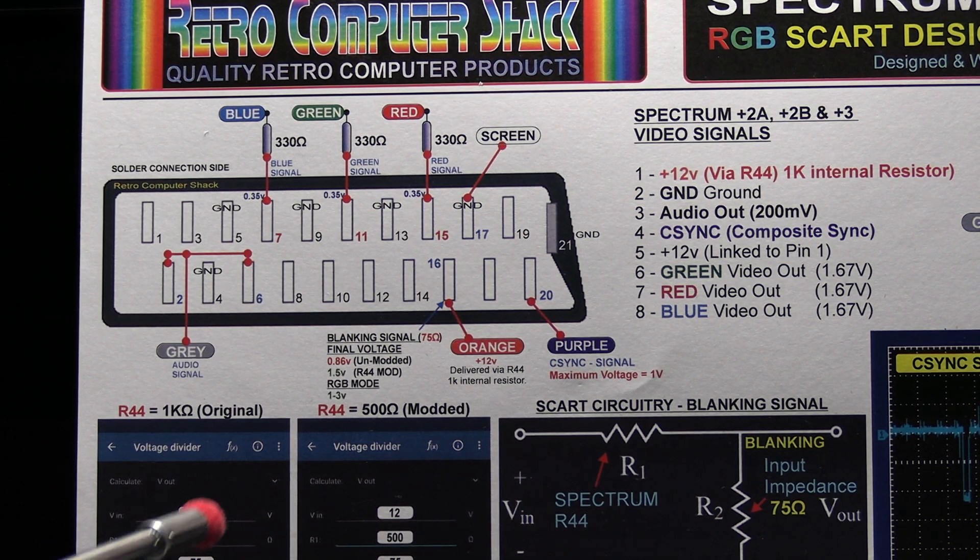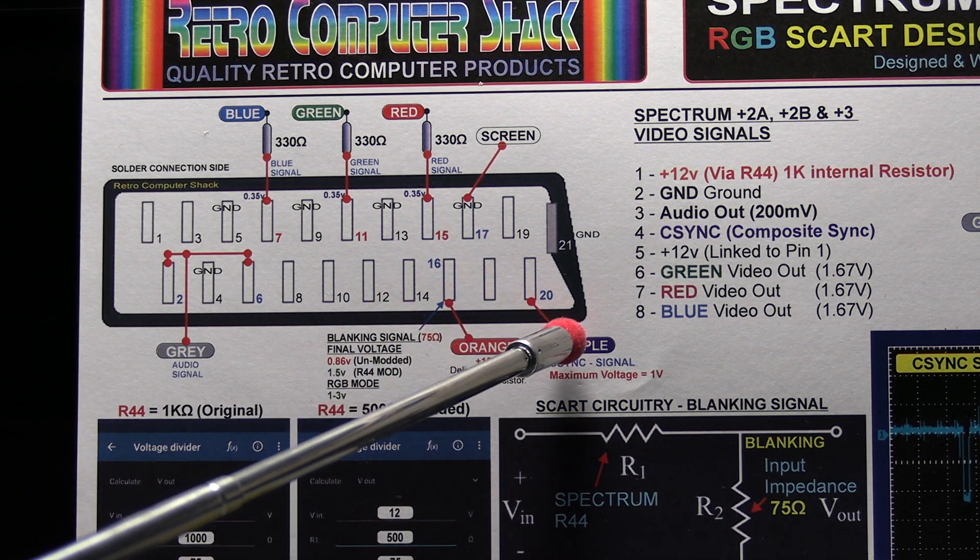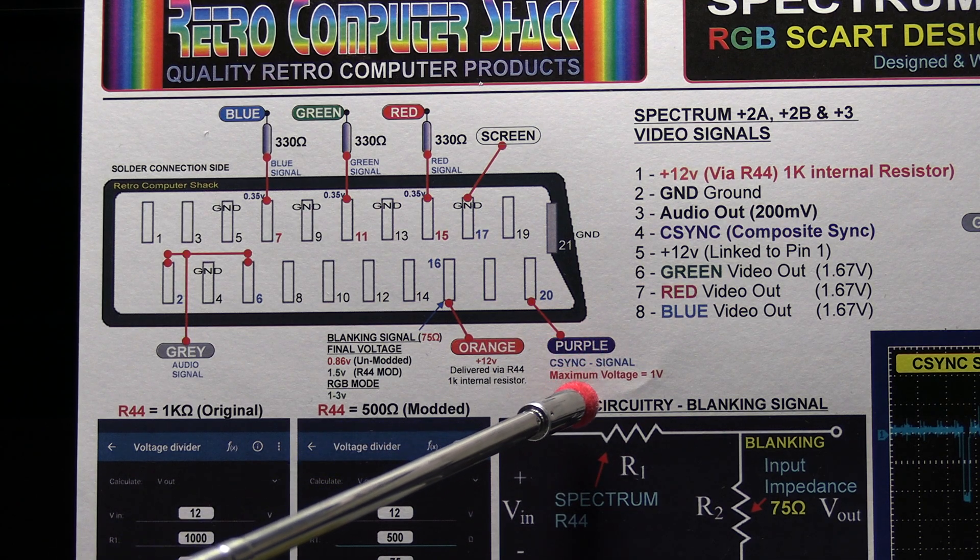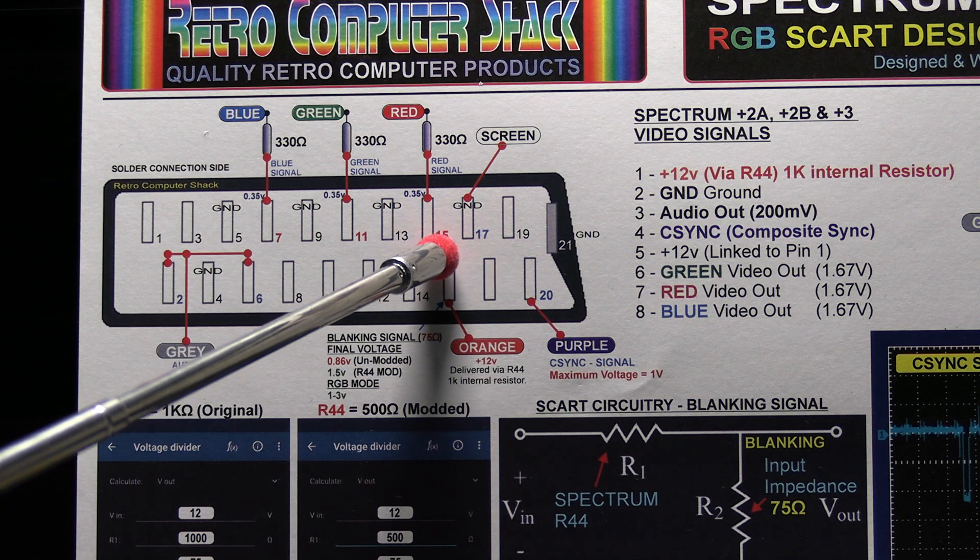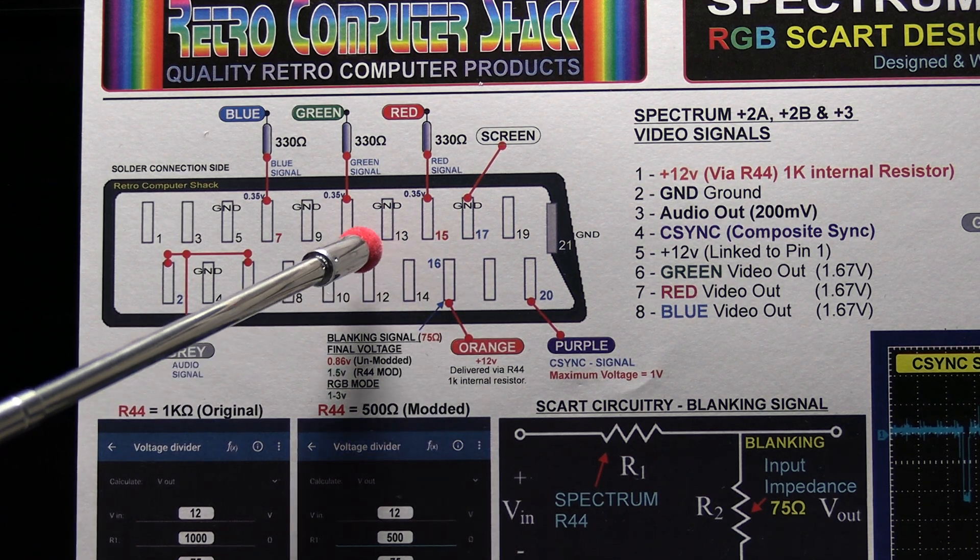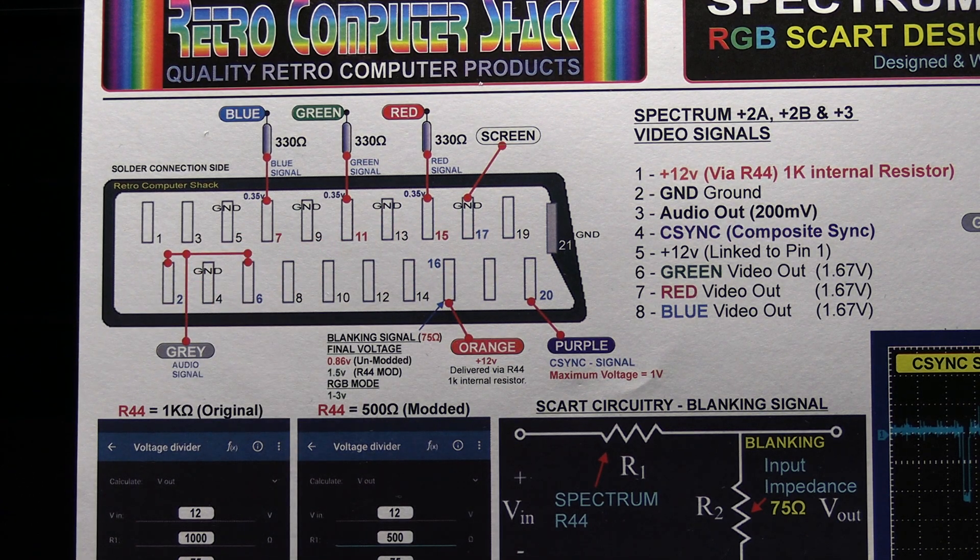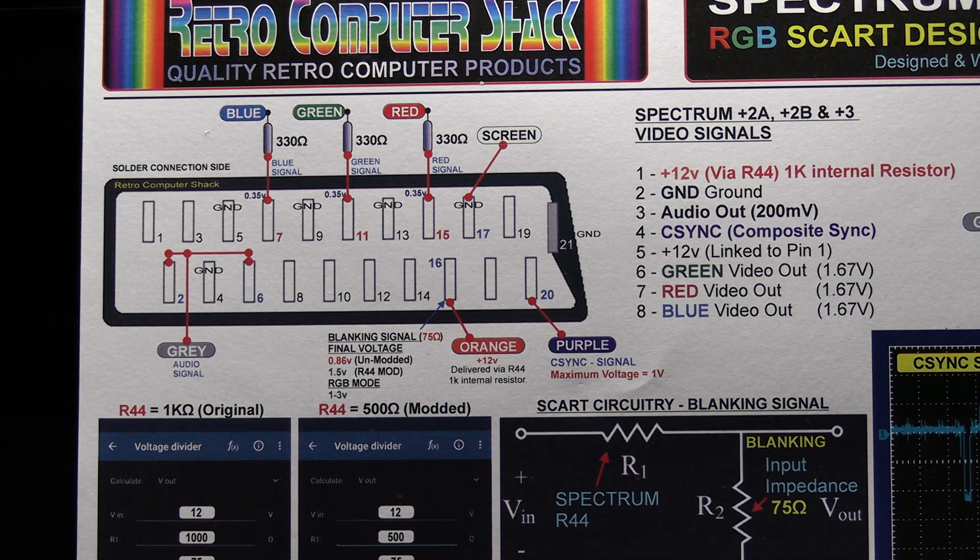If you get a voltage of less than one volt, it will treat the signal on pin 20 as a composite video signal and it will ignore the data on pins 15, 11 and 7 and switch the TV into composite video mode.